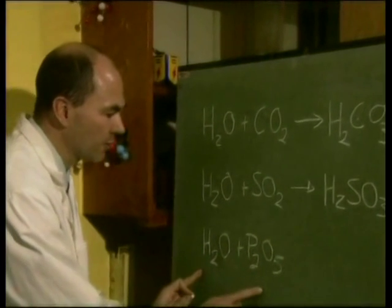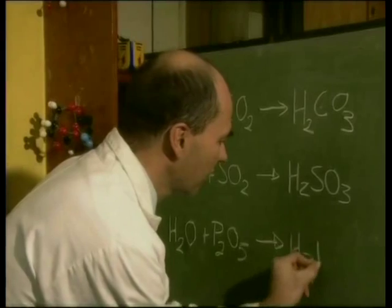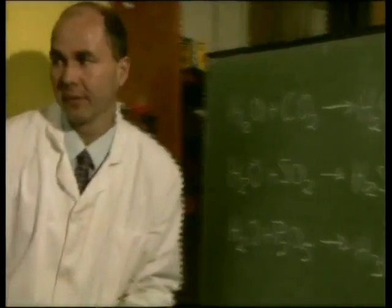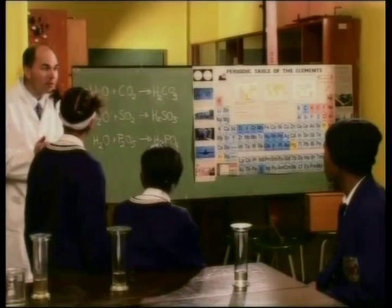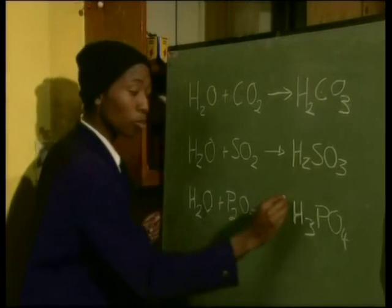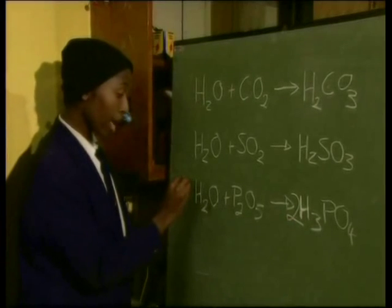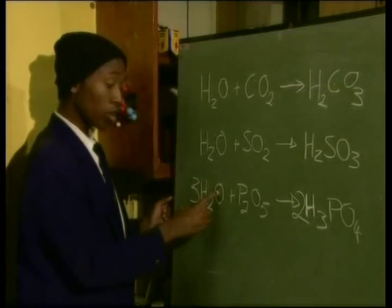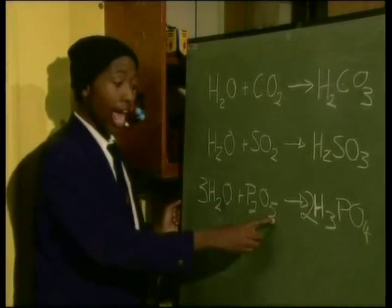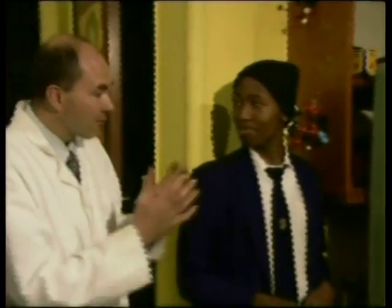When water combines with phosphorus pentoxide, it forms phosphoric acid, which is a little bit more tricky. The formula is H3PO4. But there's something not quite right with this equation — it's not balanced. Would anybody like to try and balance it? Because I've got one phosphorus on that side and two on the other, I need to add another two on this side. This affects the hydrogen, making it six hydrogens, so I'll need to add another three water molecules. This gives three oxygens plus the five oxygens from P2O5, equaling eight oxygens, which matches four times two on the other side. So the balanced equation is P2O5 + 3H2O → 2H3PO4.